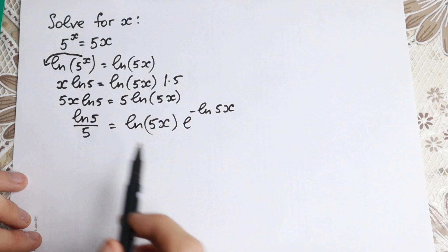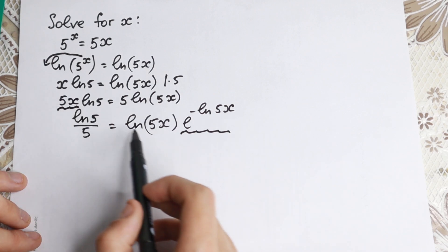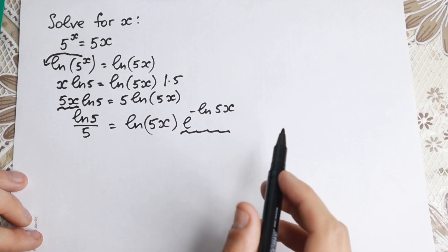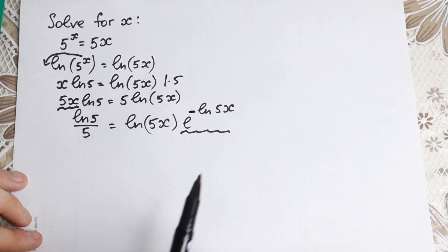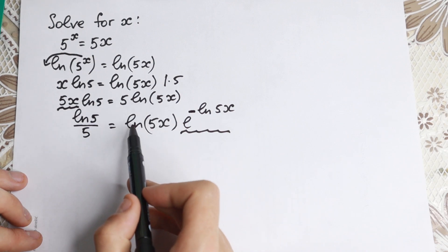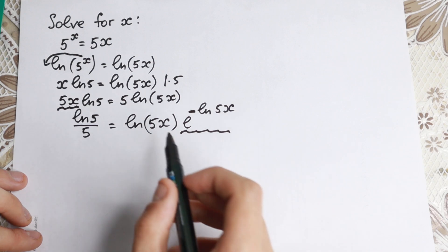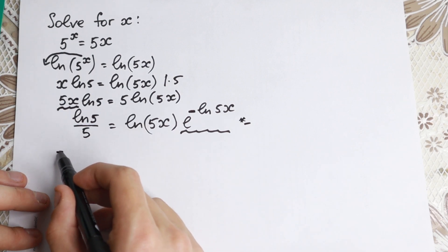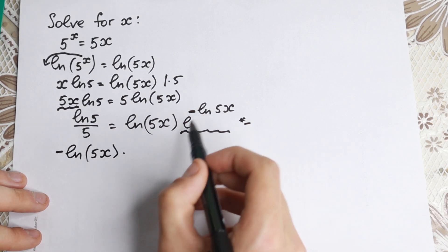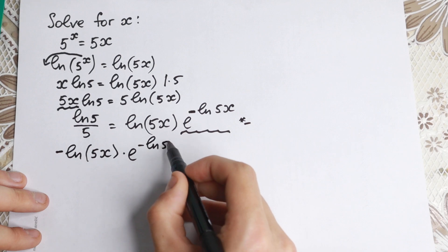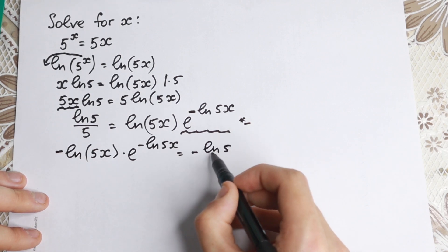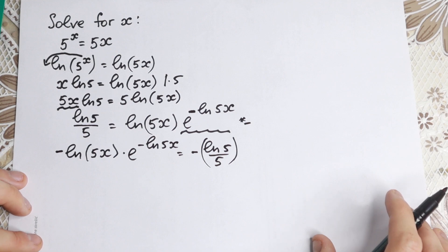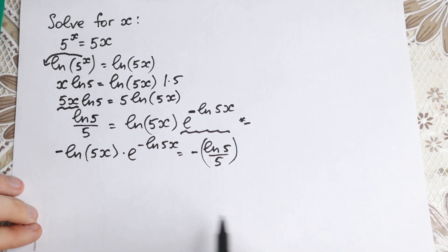I write this element 5x in the form e^(−ln 5x) and bring it to the right-hand side. We have this element with a minus sign. We need to write this logarithm with a minus sign because we are going to apply the Lambert W function. Multiplying both sides by negative one, we have minus ln(5x) times e^(−ln 5x) equal to minus ln 5 over 5.